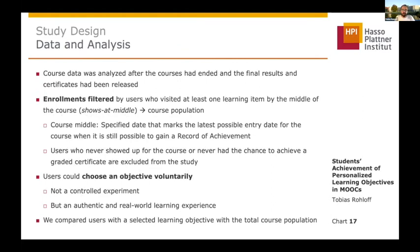For our study we used the course data after the course ended and the final results and certificates had been released. We filtered the enrollments for users who visited at least one learning item by the middle of the course — we call them 'shows at middle' — and this is the total course population in the scope of this work. The course middle is a specific date marking the latest possible entry date when it is still possible to gain a record of achievement. Users who never showed up or joined the course later were excluded.